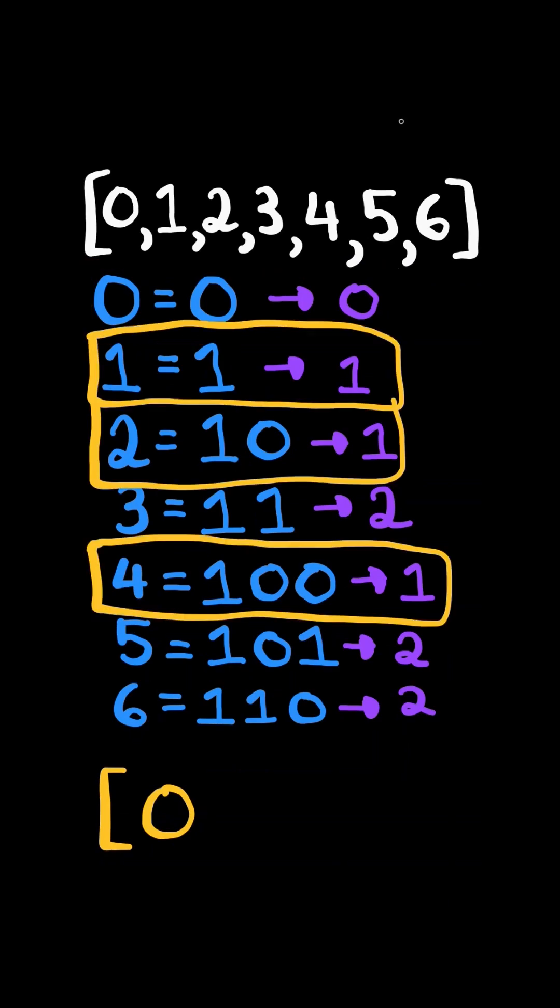0 comes first. There is a tie for the number of 1 bits, so we sort them in ascending order.